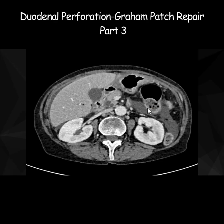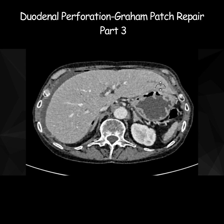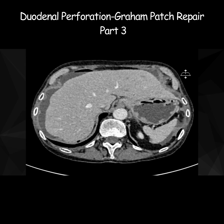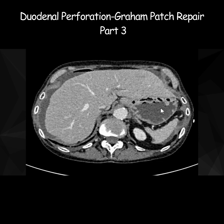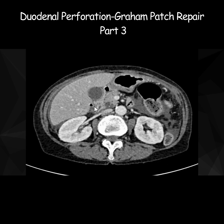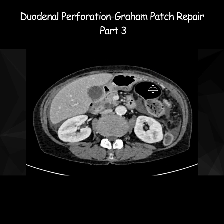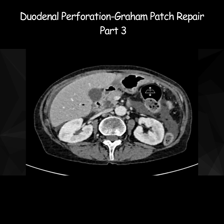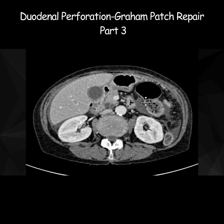The next step is to identify the site of perforation. The duodenum, particularly the second part of the duodenum, is a common site when you see free gas around the liver hilum, and that's where we would look first. I'll go through the normal anatomy with you. This is obviously the stomach, part of the gastroduodenal junction, pylorus, D1, and then here is D2.